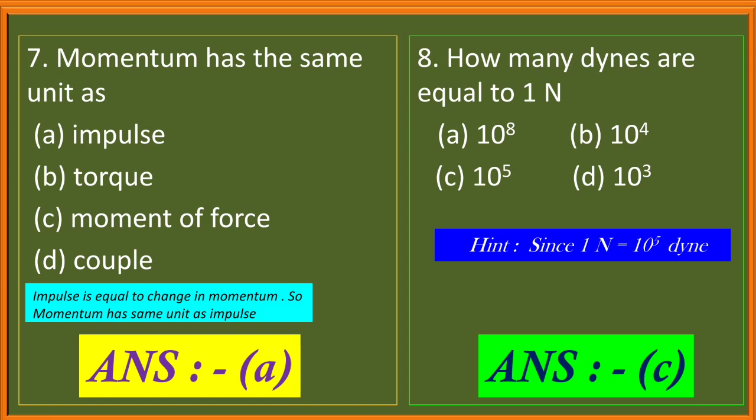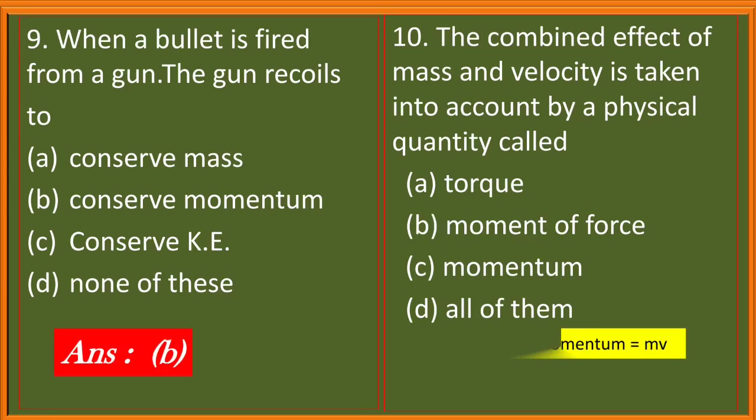Question 8. How many dynes are equal to 1 newton? It is 10 to the power 8, 10 to the power 4, 10 to the power 5, 10 to the power 3. We know that 1 newton equal to 10 to the power 5 dynes. So your correct answer will be C, 10 to the power 5.